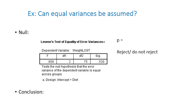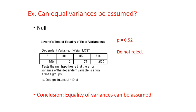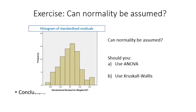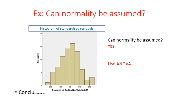Can equal variances be assumed? Looking at the output, the p-value is 0.52, so we do not reject the null and equality of variances is assumed. Using the residuals plot, normality can also be assumed, so we proceed with the analysis of variance.